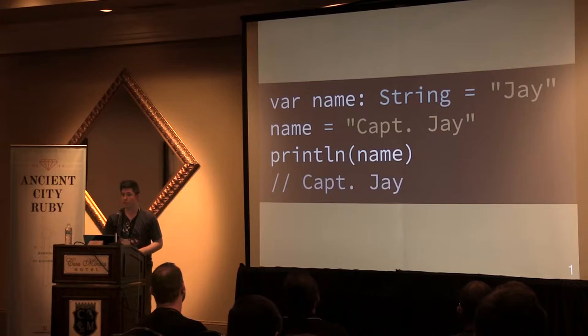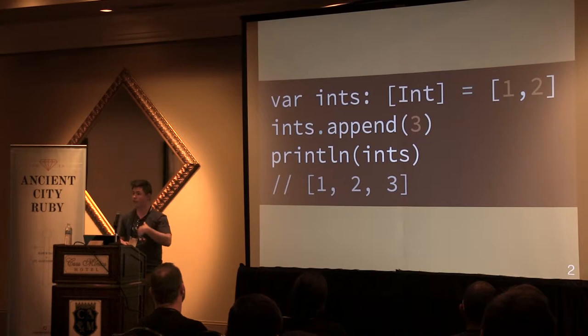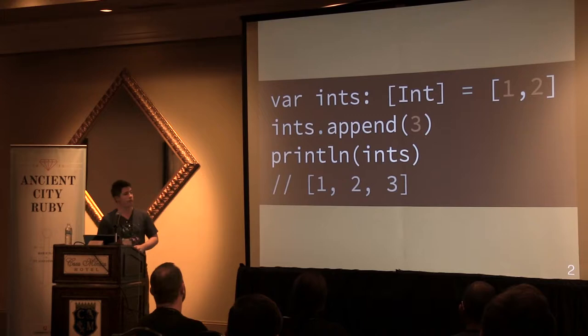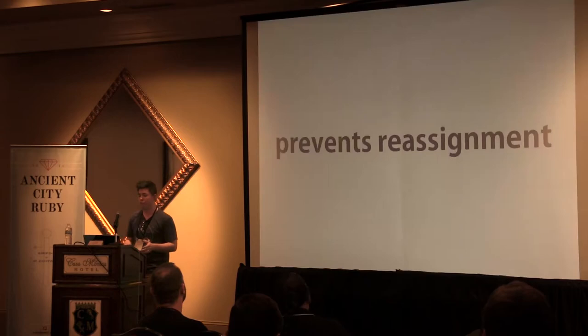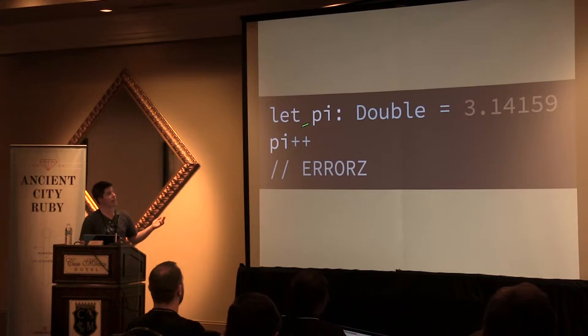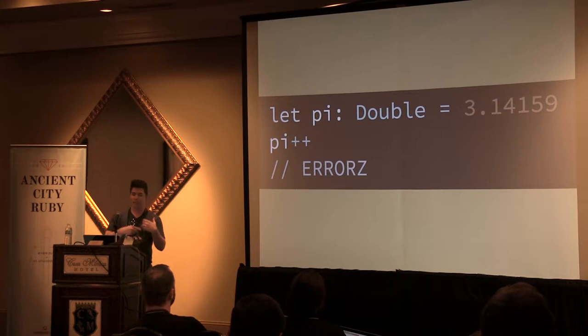Variables also allow mutations. So if you have a mutable type such as an array of integers, you can use a mutating function like append to add another element. Another value in Swift is a constant, declared with the let keyword. Constants prevent reassignment. If we have a constant of type double set to some literal double value and we try to increment it, Swift won't allow it and will say you can't reassign to a constant.